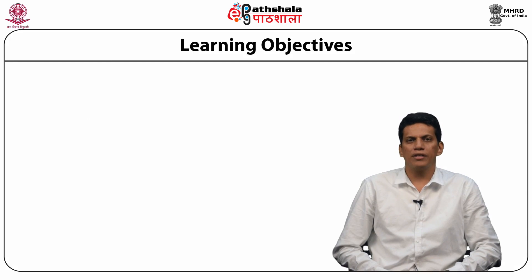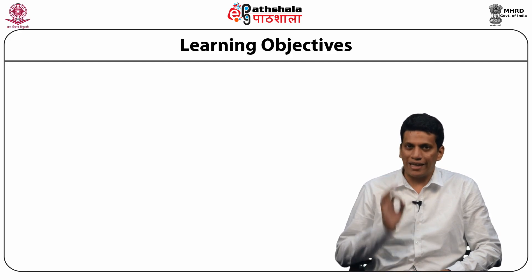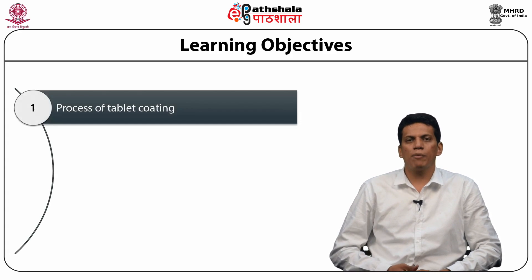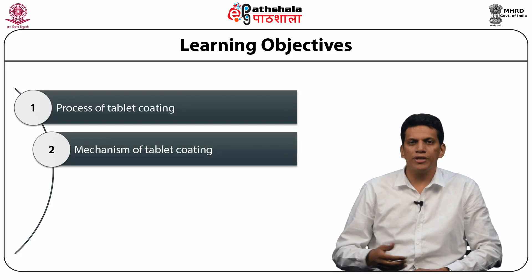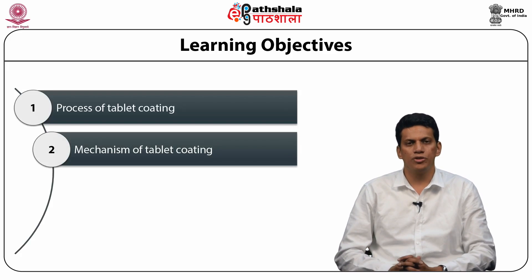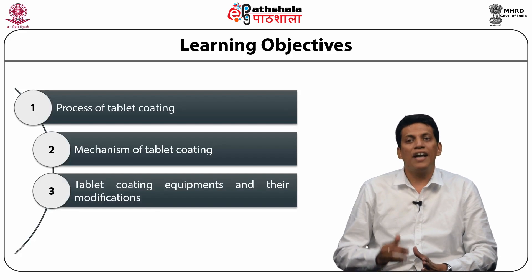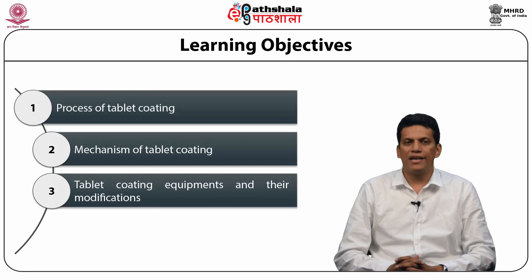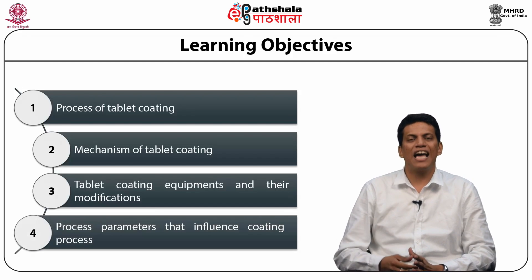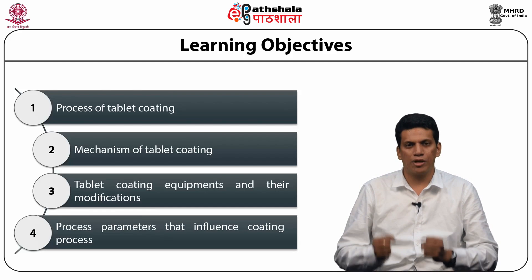This lecture will make you understand about the impact and usefulness of coating. It will tell you about the objectives of the coating process, the components involved in tablet coating and how these components influence coating procedures, the working of tablet coating equipment and how modifications have improved the process, and finally, how process parameters and variables dictate tablet coating and how these variables can be controlled.